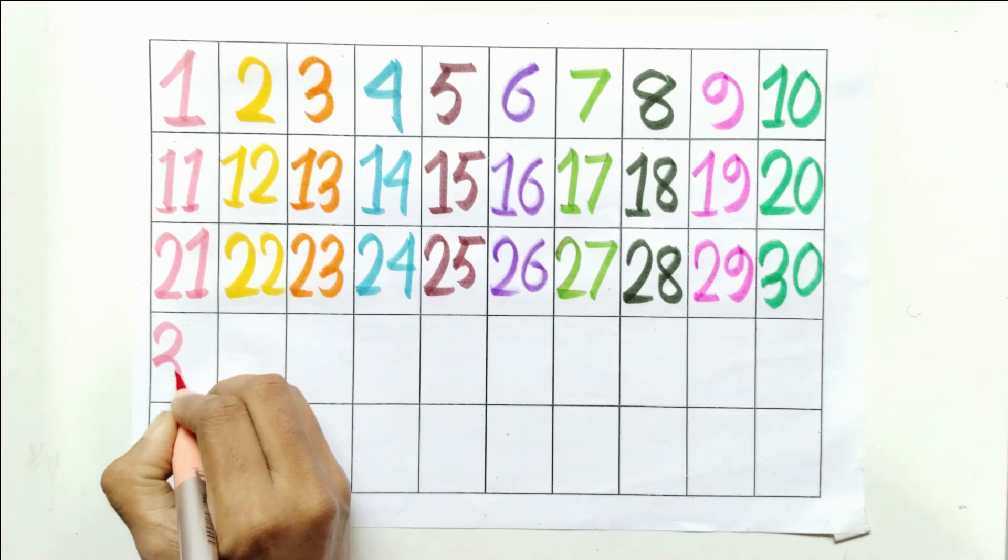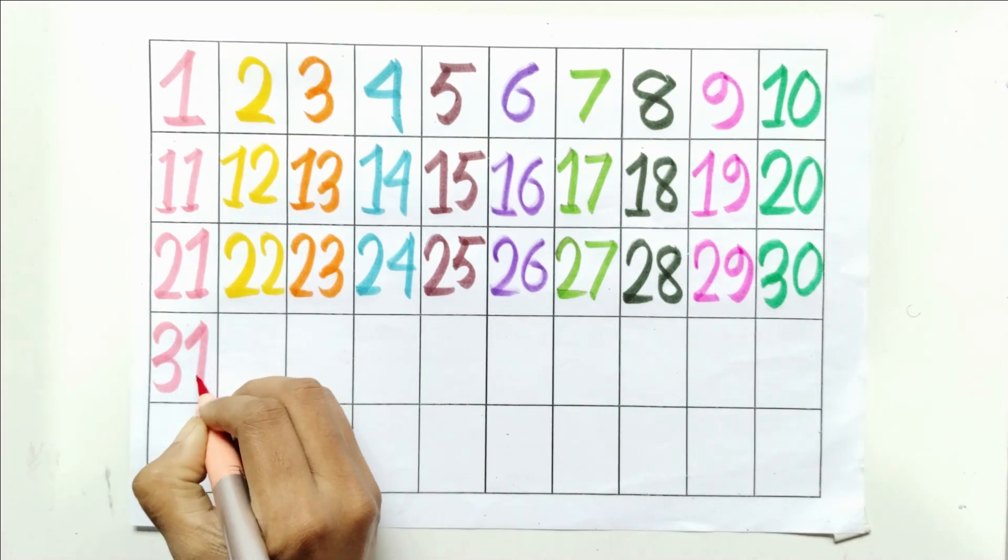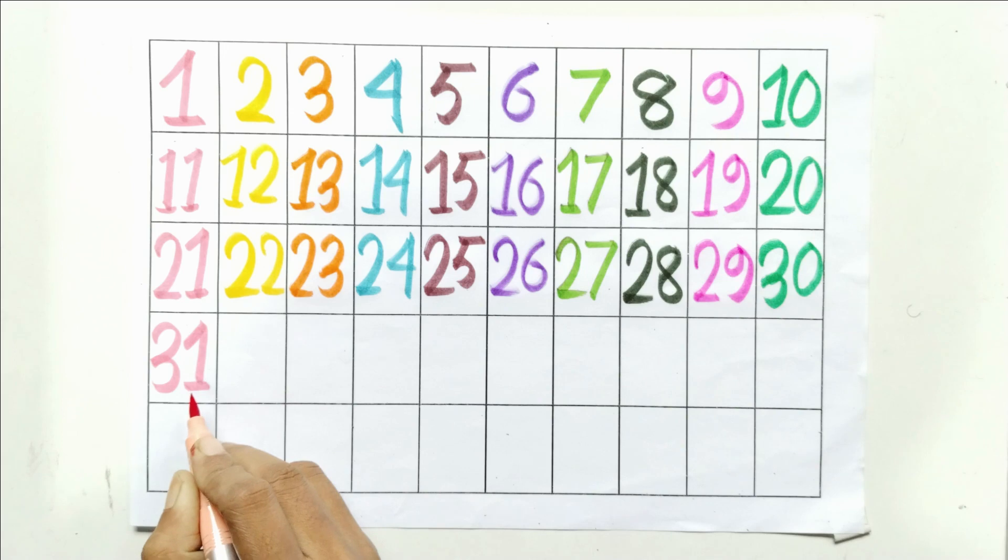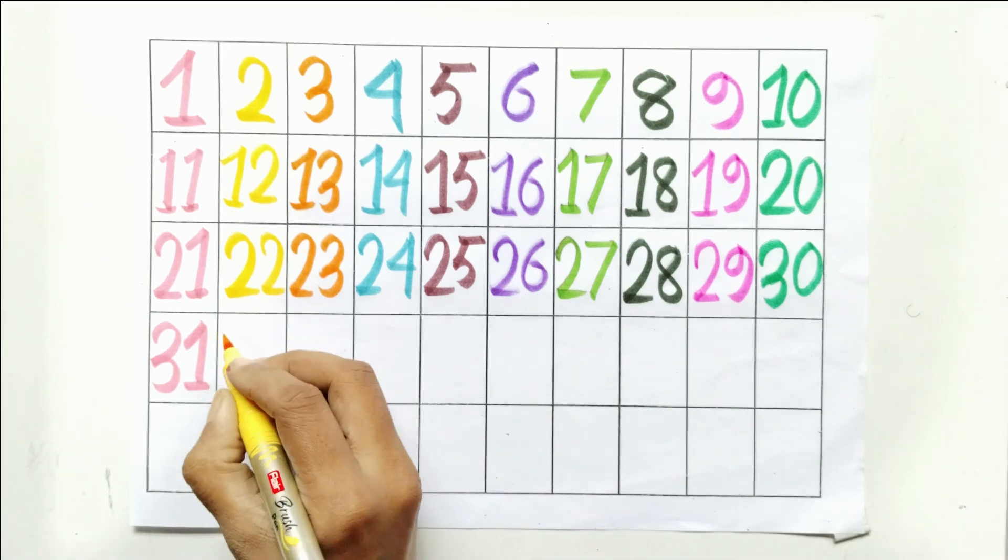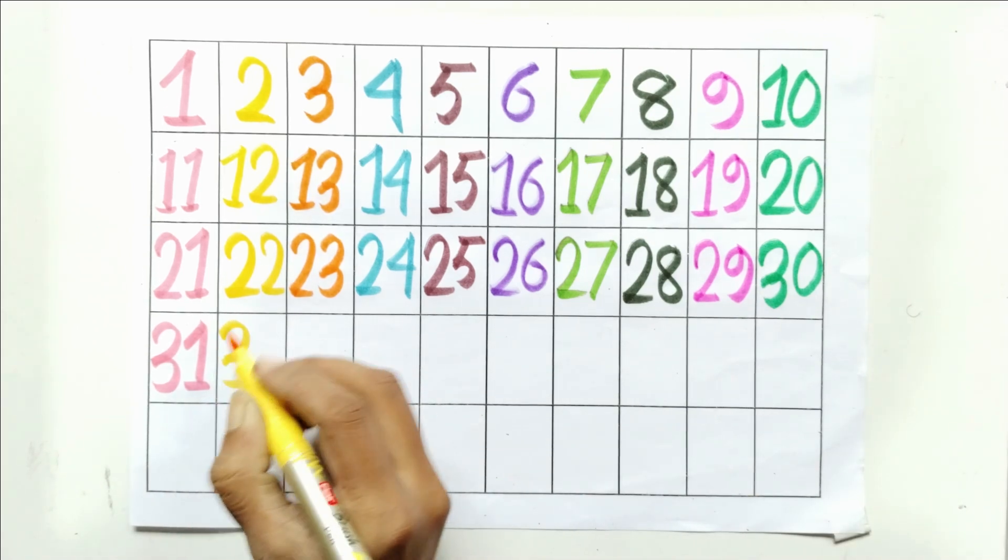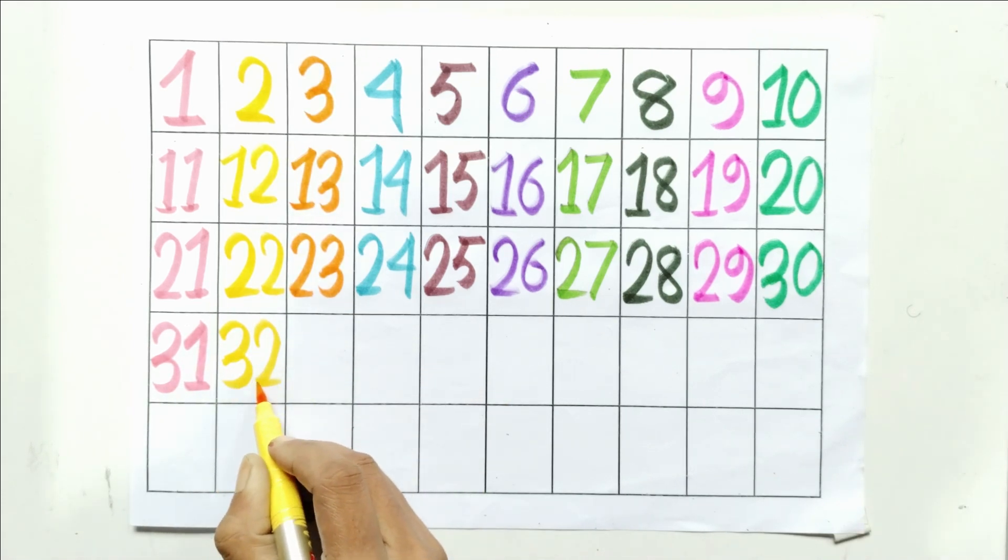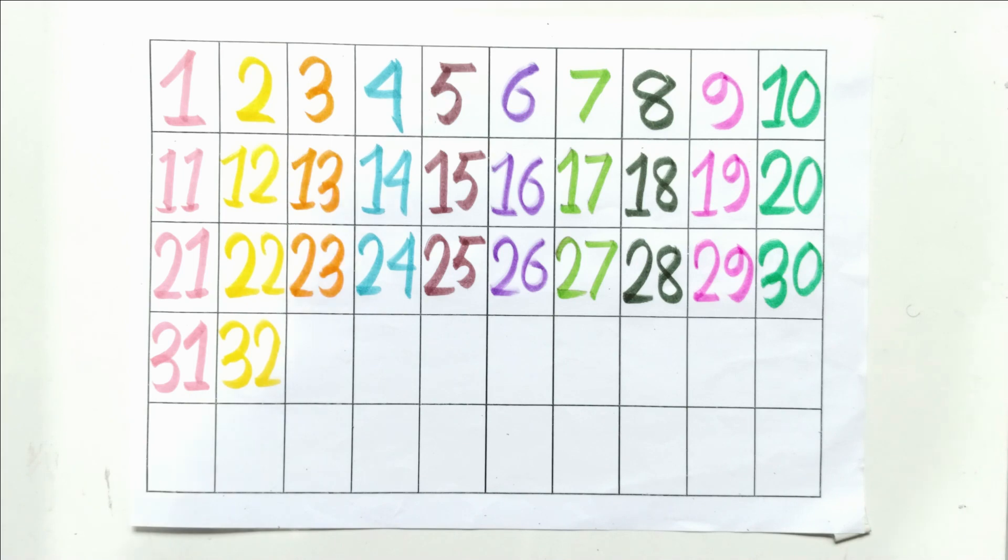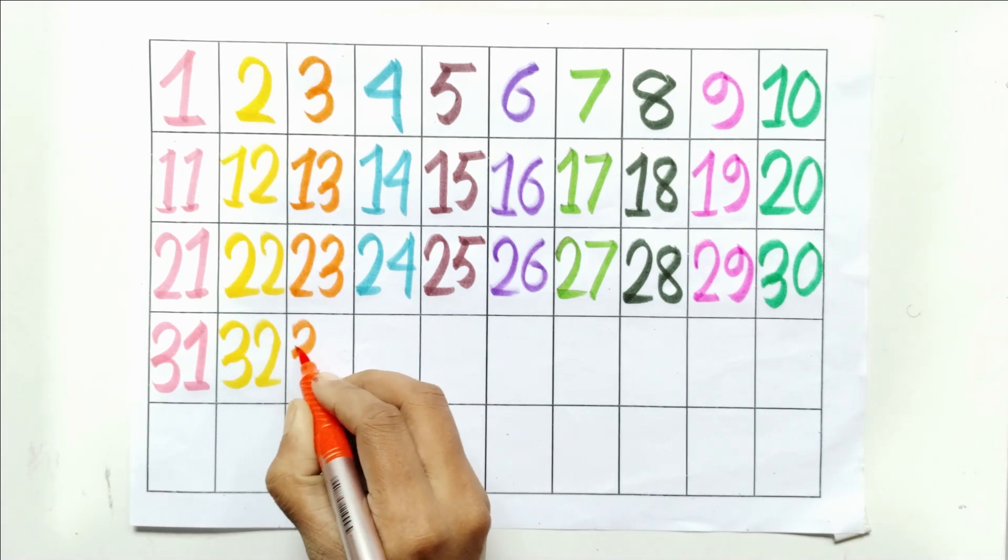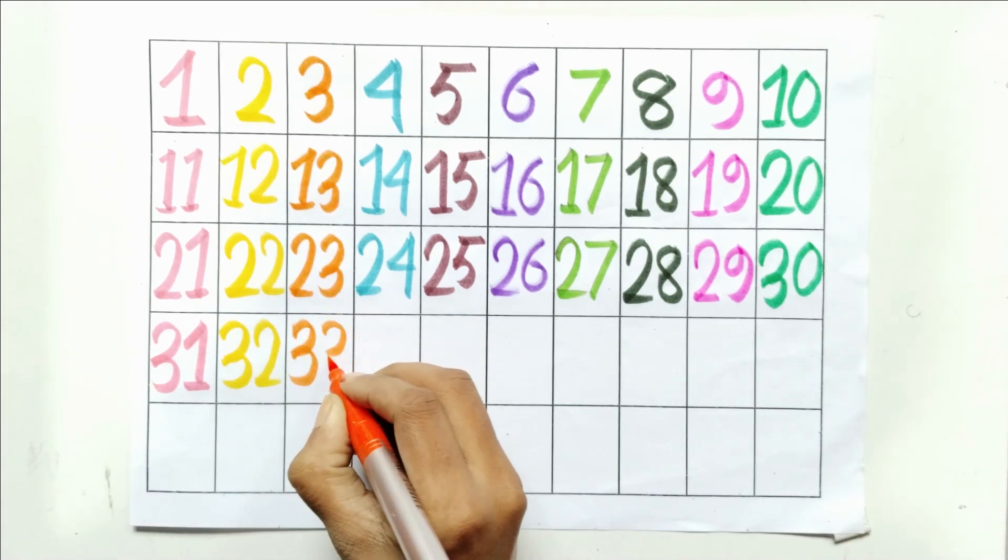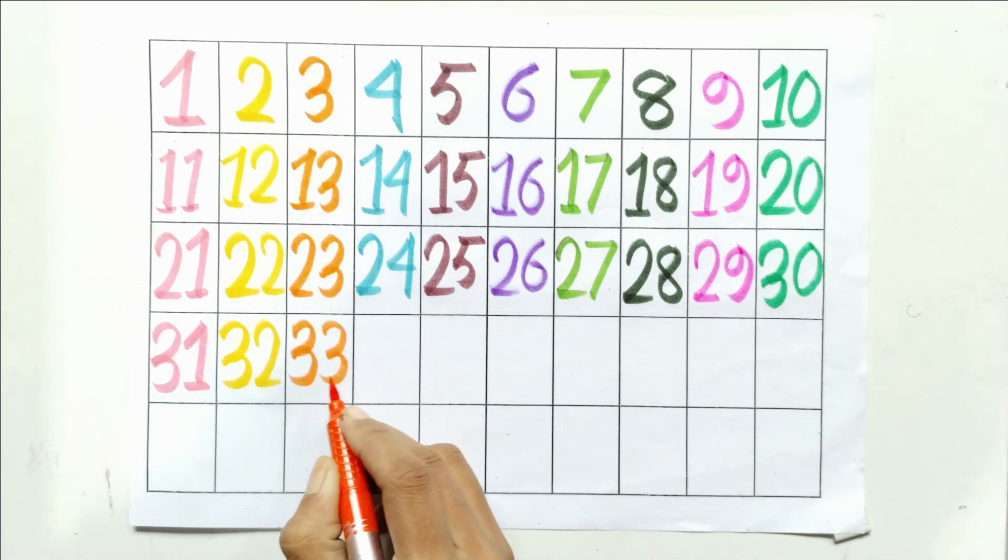Three and one, thirty-one. Three and two, thirty-two. Three and three, thirty-three.